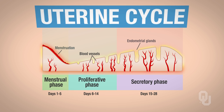There's also the uterine cycle. The uterine cycle has three phases to it: there's the menstrual phase, there's the proliferative phase, and there's the secretory phase.